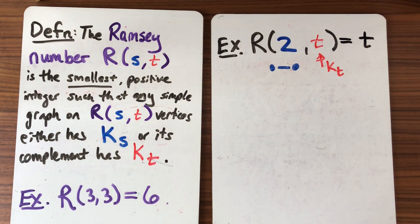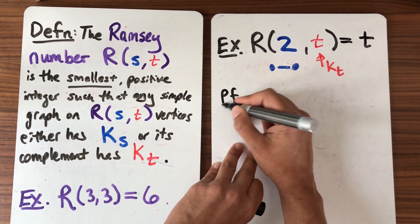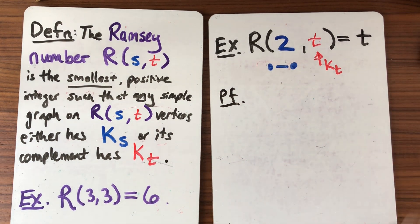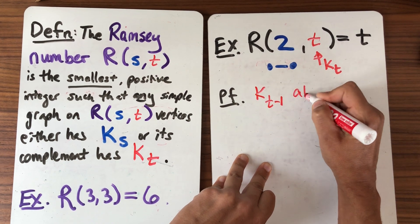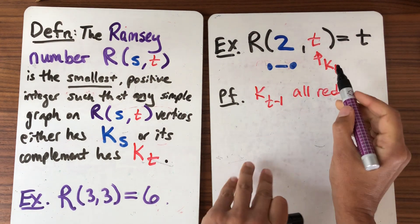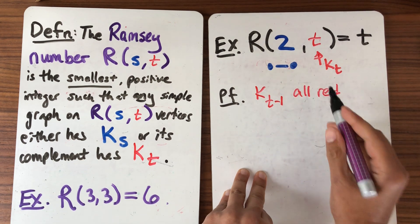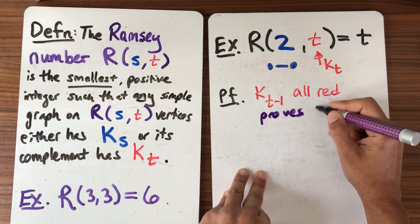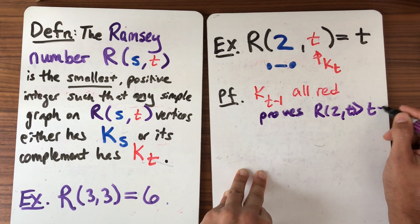Again there are two steps to show. Okay so the proof has two steps. So if I take a graph that's smaller I could take K_{t-1} all red. Okay this does not have the complete graph K_t because I don't have enough vertices and it doesn't have a blue edge because it's all red.